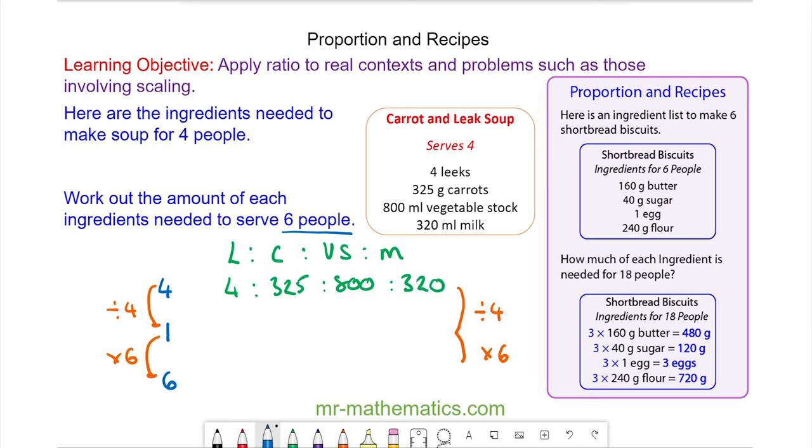For one person I need four divided by four, which is one leek. I multiply that by six and need six leeks. For carrots, I divide 325 by four to get 81.25. I multiply that by six and get 487.5 grams of carrots.